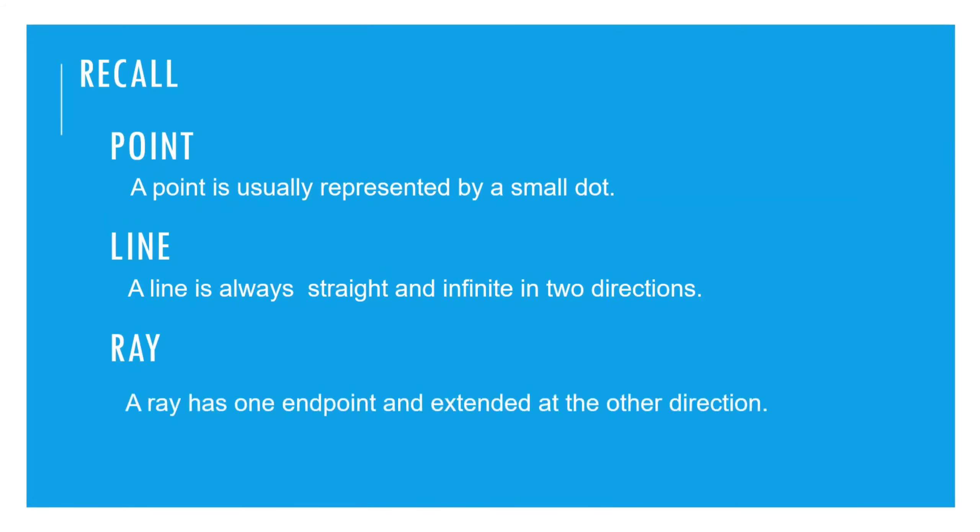Recall muna natin yung mga words na related sa topic natin ngayon. One is a point. A point is usually represented by a small dot. The line, a line is always straight and infinite in two directions. And ray, a ray has one end point and extended in the other direction. As I have mentioned, lahat na yan related sa pag-aaralan natin ngayon sa presentation na ito. Ito, tungkol yan sa different kinds of angle.